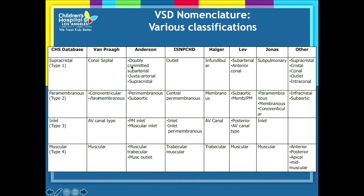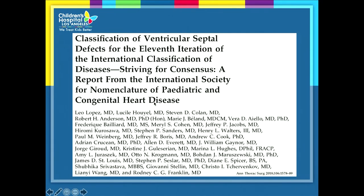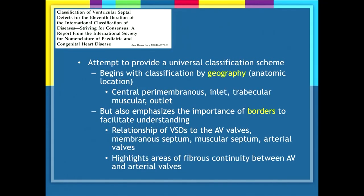I wanted to point out the ISN-PCHD — the International Society for the Nomenclature of Pediatric Congenital Heart Disease — from a paper in the Journal of Thoracic Surgery in 2018. This came out of a working group formed in 2002 after the World Congress in Toronto to try to establish uniformity in nomenclature and classification. It provided a universal classification scheme based on geography: perimembranous, inlet, trabecular muscular, and outlet.